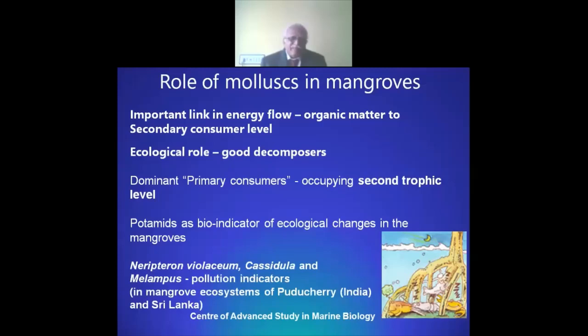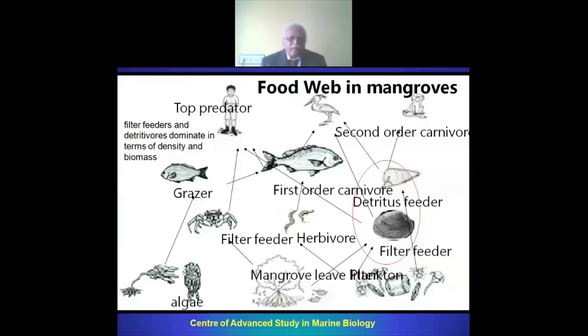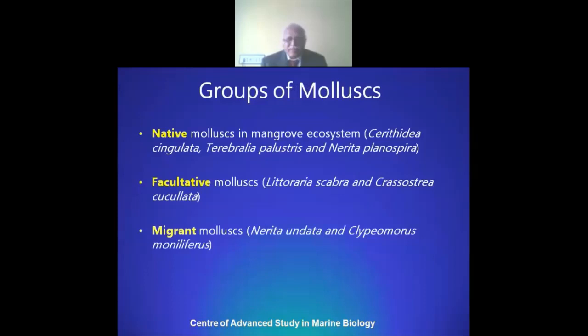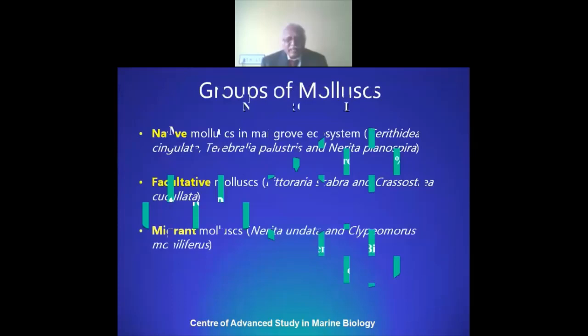Potamidids, which are nothing but the cerithiids, are used as bio-indicators of ecological changes occurring in the mangrove. Beyond this, they are also considered as pollution indicators in the mangrove system, represented by littoral molluscs namely Littorina viticlum and aerobic molluscs such as Cassidula and Melampus species. This shows the relationship of molluscs in the food web of mangroves, occupying a very important level representing filter feeders and detritus feeders.